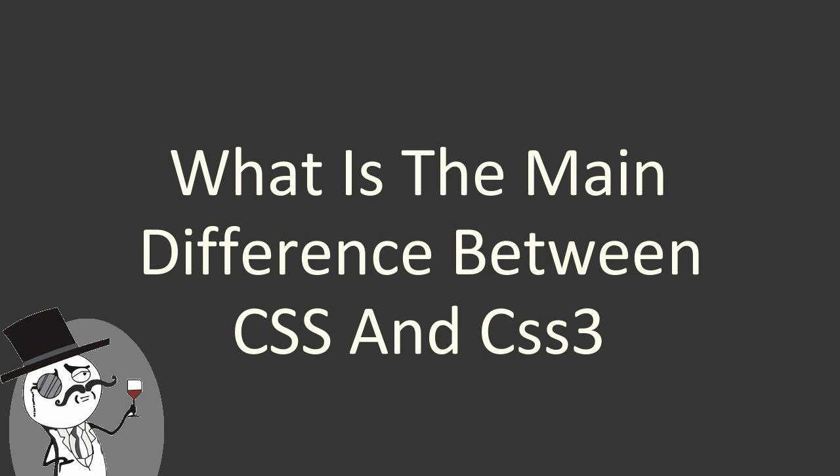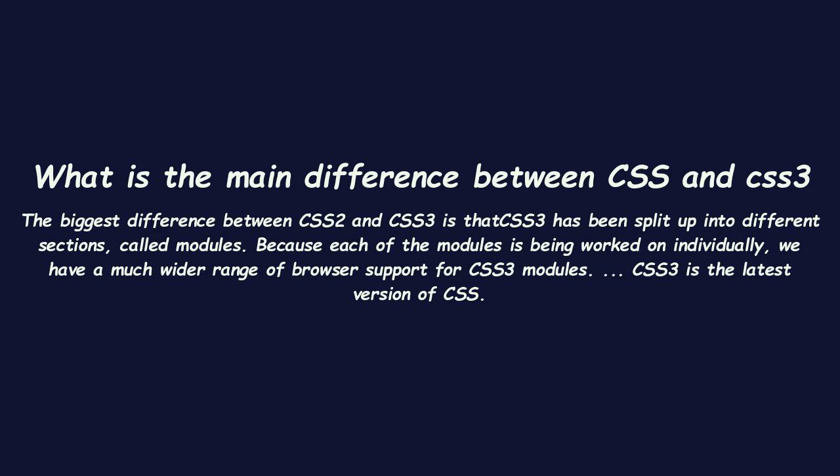Here is the explanation about what is the main difference between CSS and CSS3. The biggest difference between CSS2 and CSS3 is that CSS3 has been split up into different sections, called modules. Because each of the modules is being worked on individually, we have a much wider range of browser support for CSS3 modules. CSS3 is the latest version of CSS.